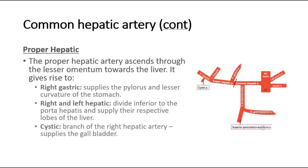The proper hepatic artery ascends through the lesser omentum towards the liver. It gives rise to the right gastric artery, that supplies the pylorus and lesser curvature of the stomach; the right and left hepatic arteries, that divide inferior to the porta hepatis and supply their respective lobes of the liver; and the cystic artery, a branch of the right hepatic artery that supplies the gallbladder.